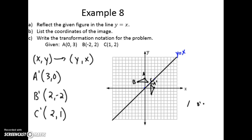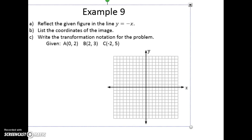You'll also notice that with reflections the shape stays the same — it just changes its orientation. All the angles are the same as the pre-image, and all the sides are the same as the pre-image as well. So we're not changing size, just orientation.